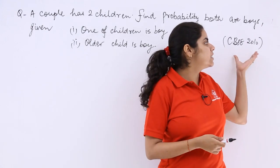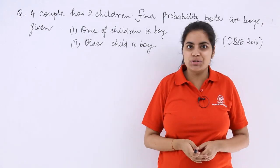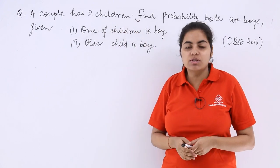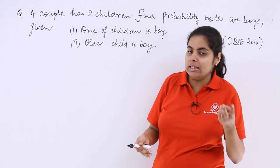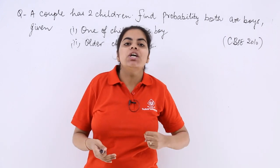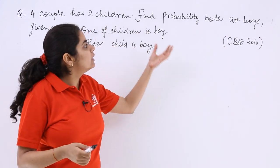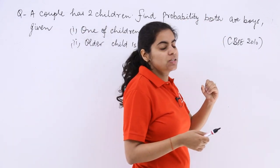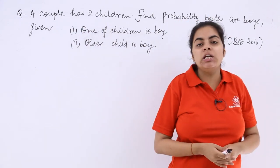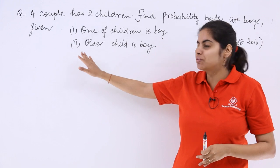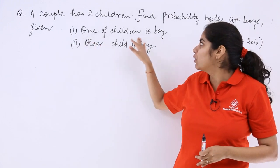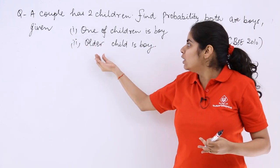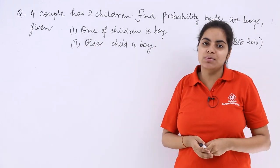Let's do the question asked in the CVSC examination 2010. It says a couple has two children. We have to find the probability that both are boys, given two conditions: first, one of the children is a boy, and second, the older child is a boy.